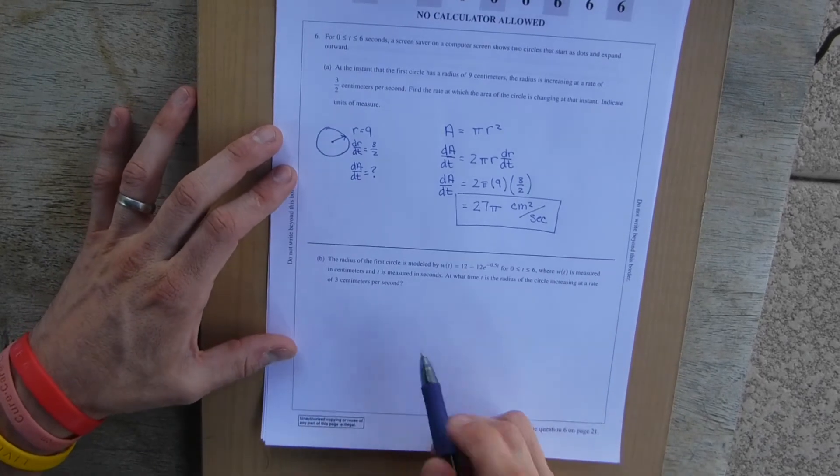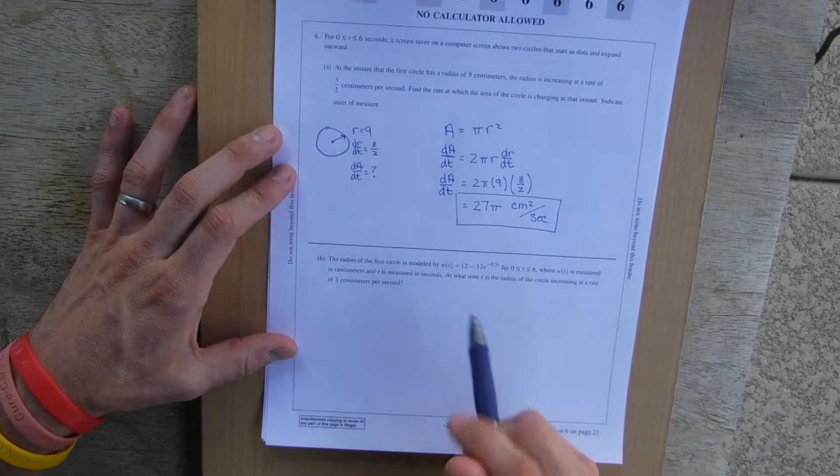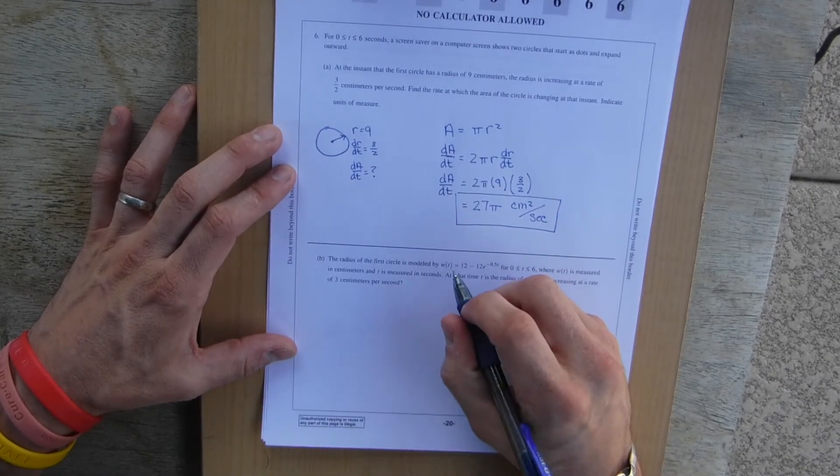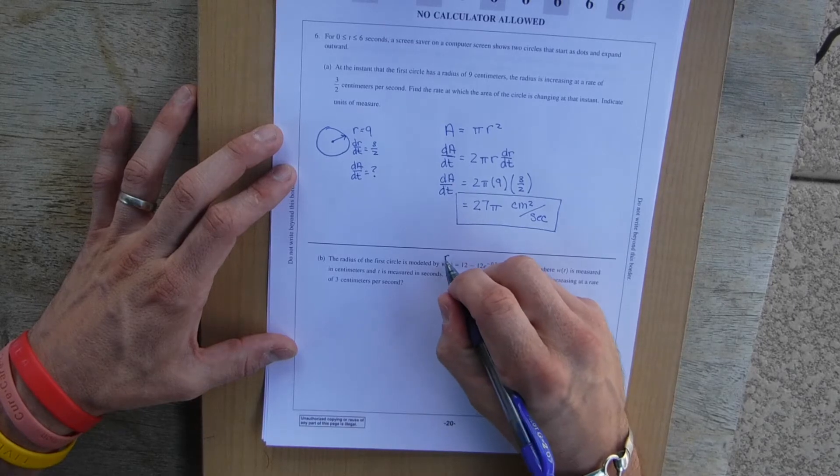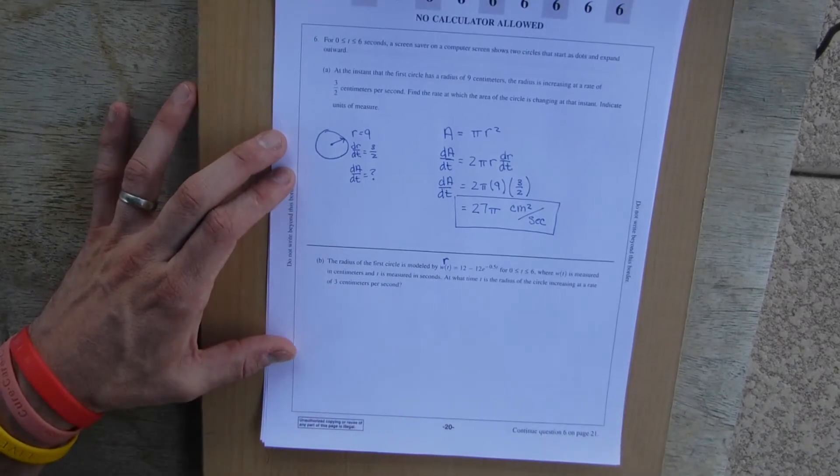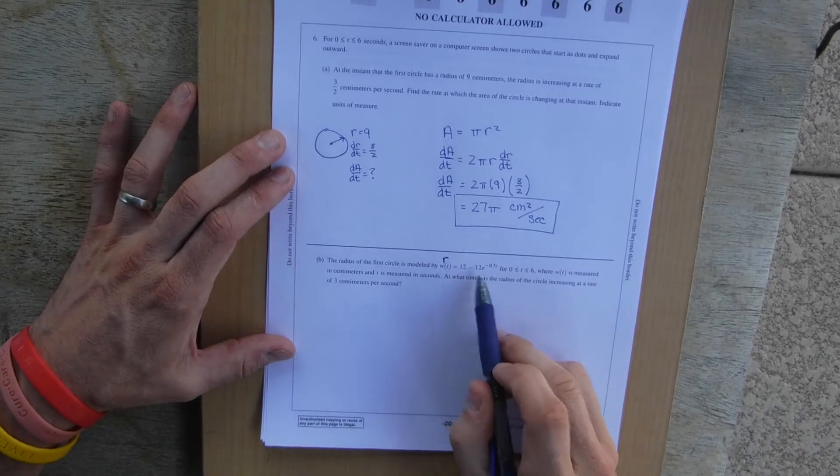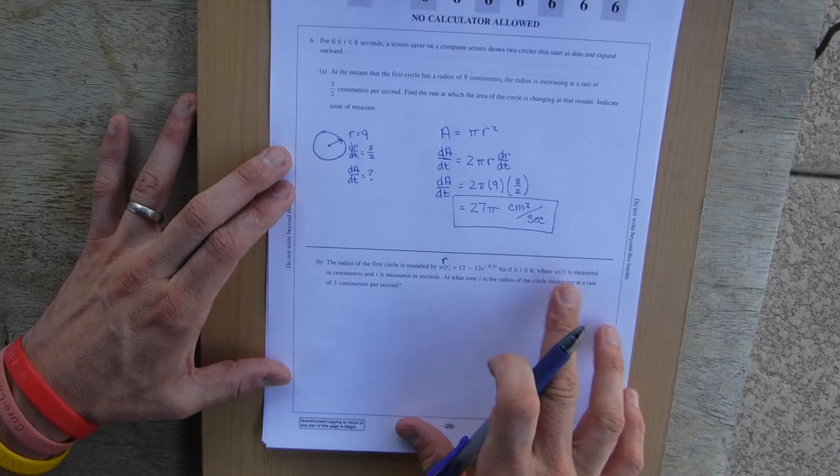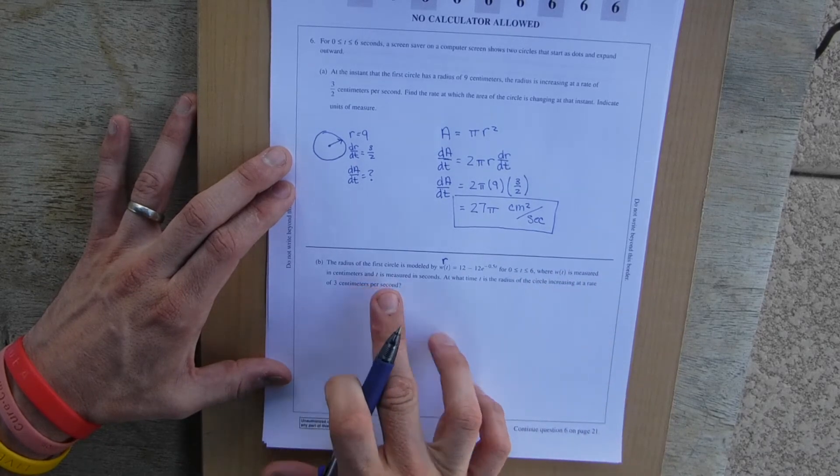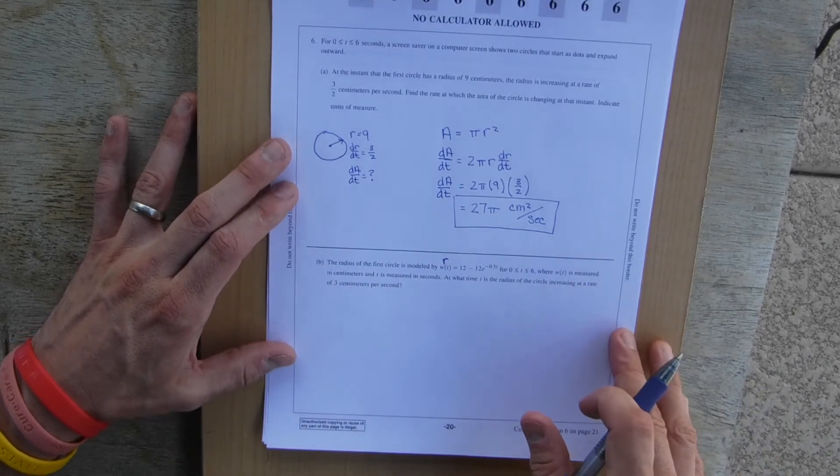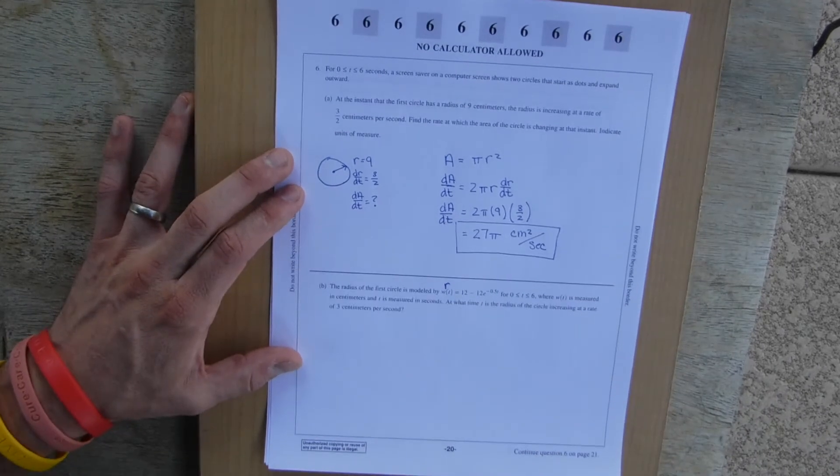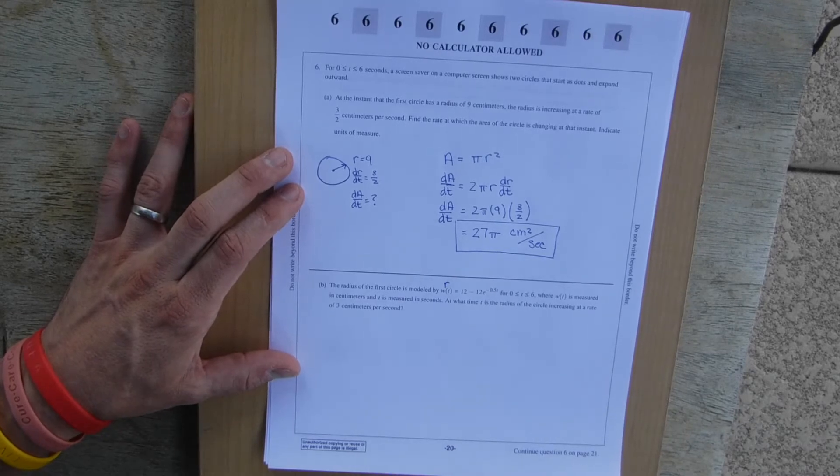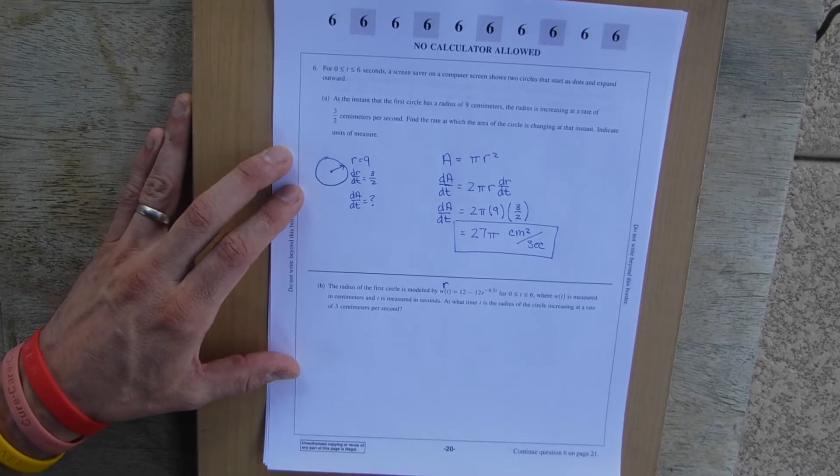Okay, part B. The radius of the first circle, so again the first circle is modeled by W is equal to... okay, so this is the radius. So this is the radius of the first circle. Radius is W, okay whatever. Is modeled by that, for 0 to 6 seconds. Okay, where the radius is measured in centimeters, t is measured in seconds. At time t, is the radius of the circle increasing at a rate of 3 centimeters per second?